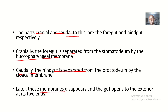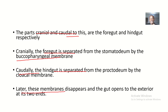Later on, these membranes disappear. At the cranial part, the buccopharyngeal membrane must disappear so the mouth becomes open. At the caudal part, the cloacal membrane must disappear so the anus becomes open and the rectum connects to the outside. Failure of these membranes to disappear will cause various anomalies.